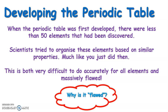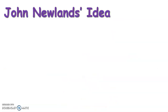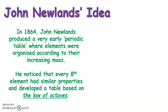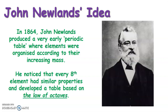One of the main names in developing the periodic table was John Newlands, in 1864. He produced a very early version of the periodic table where he organized elements according to their increasing atomic mass. He noticed that every eighth element had similar properties to the one eight elements before it, and so he came up with what he called the Law of Octaves — 'oct' meaning eight, like an octagon or an octopus.